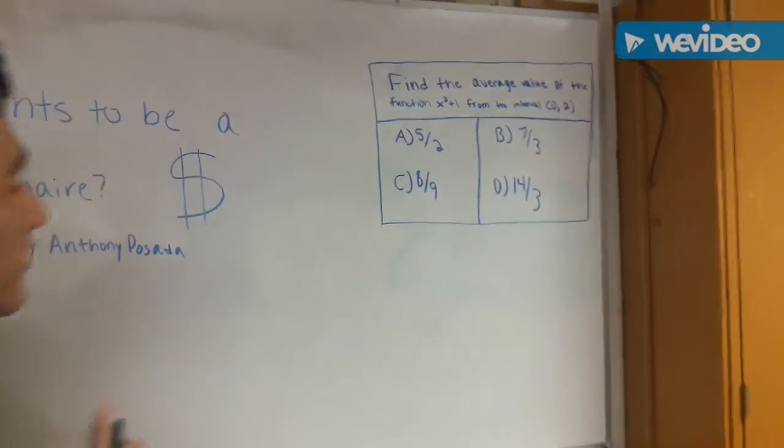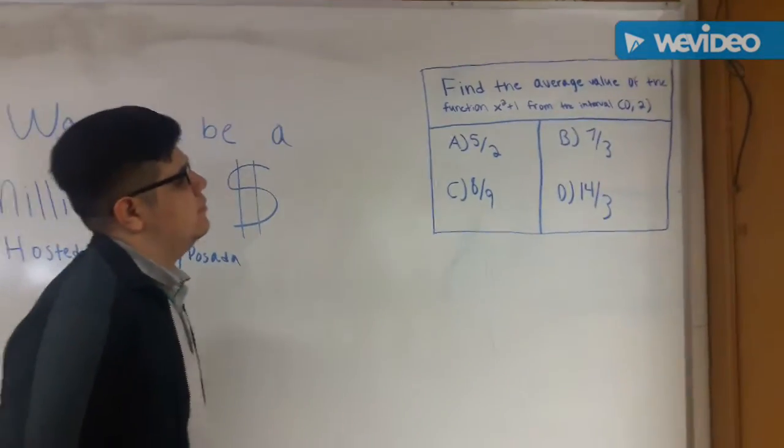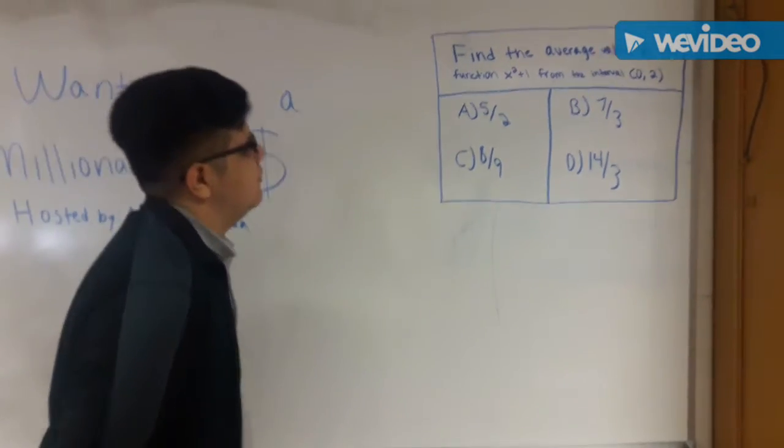Find the average value of the function x squared plus one from the interval of zero to two. You have two minutes to answer your question.